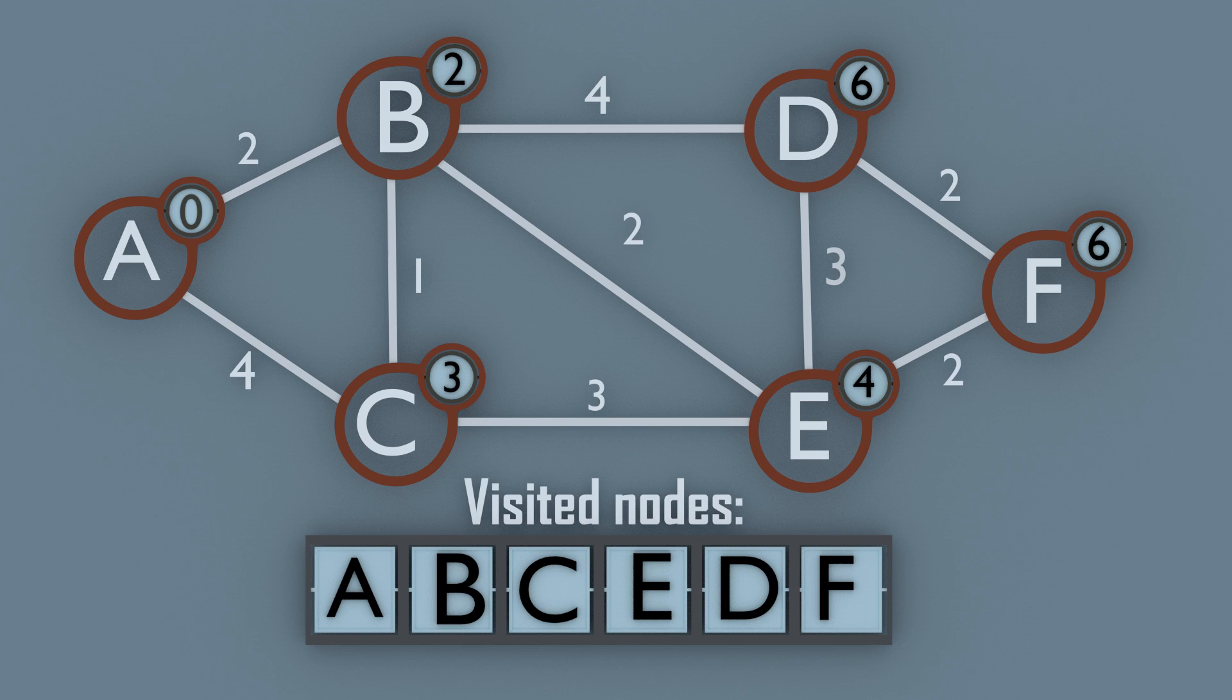Now when all of the nodes are visited, we can see that the shortest path from node A to F is through nodes B and E with the total distance of 6.